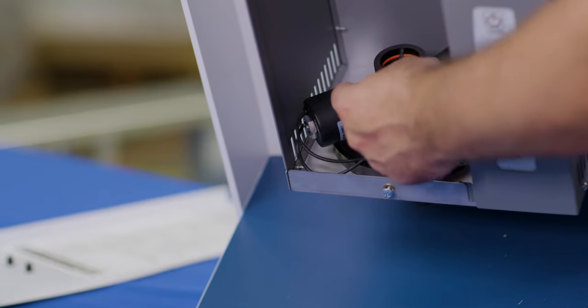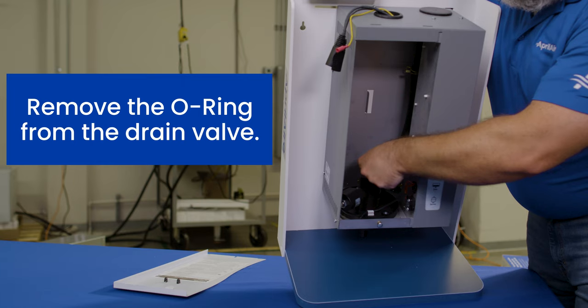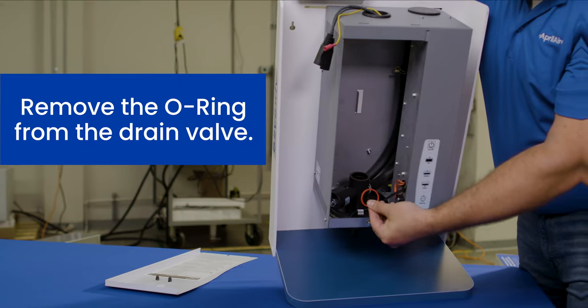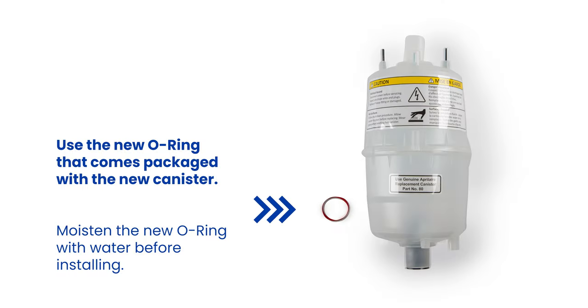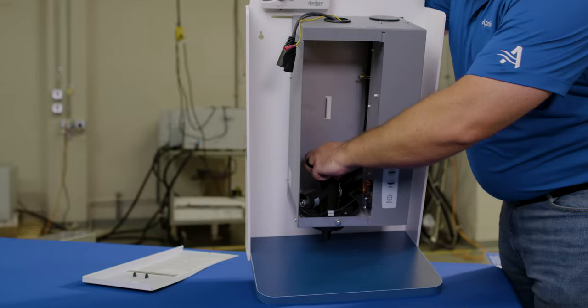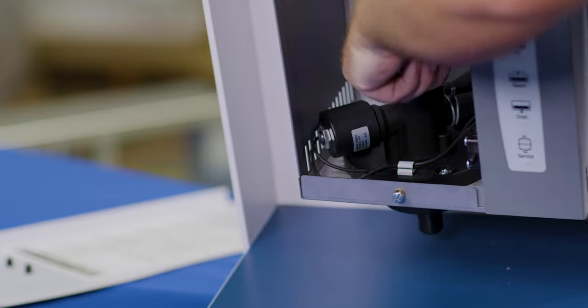Use a small screwdriver to remove the o-ring currently in the unit and replace it with the one that came with your new canister. Dampen the o-ring with water, then push it down until it's seated into the groove inside the valve.